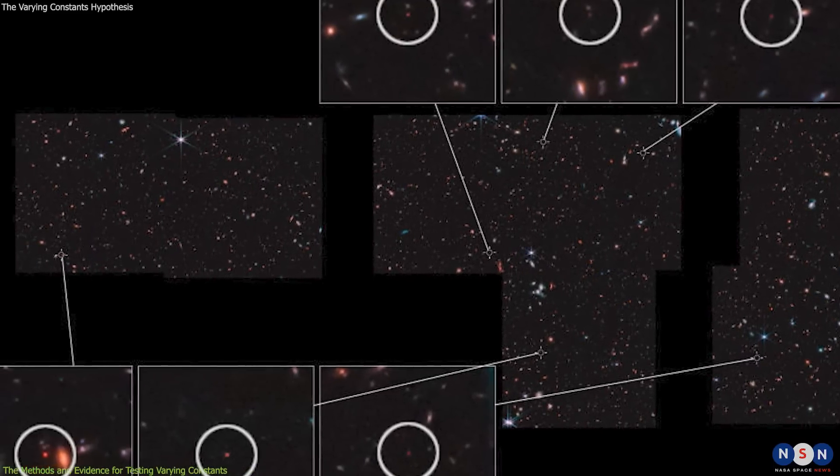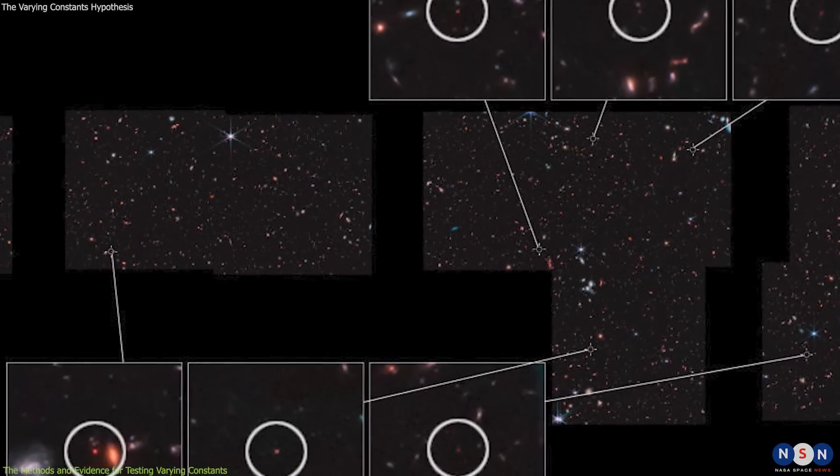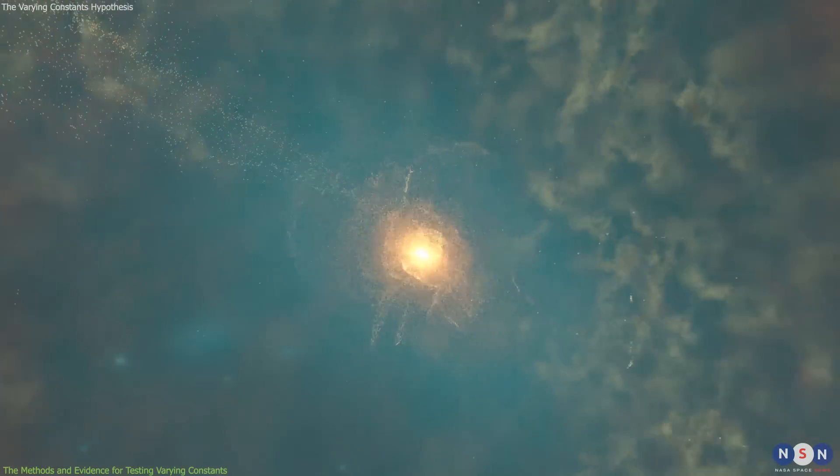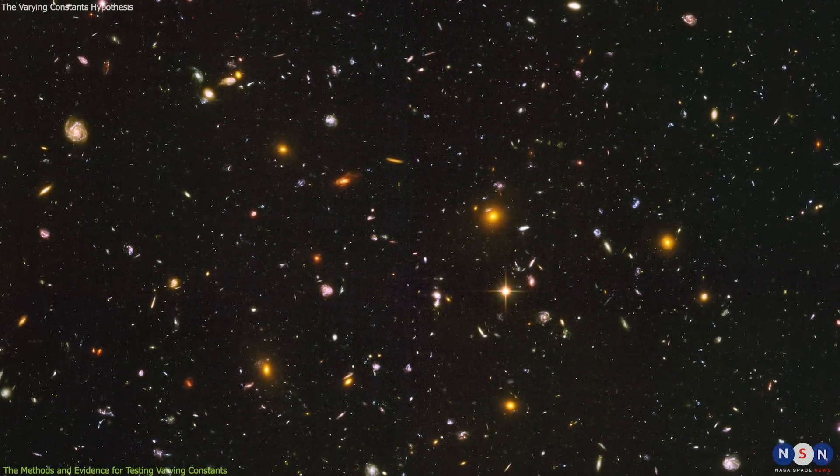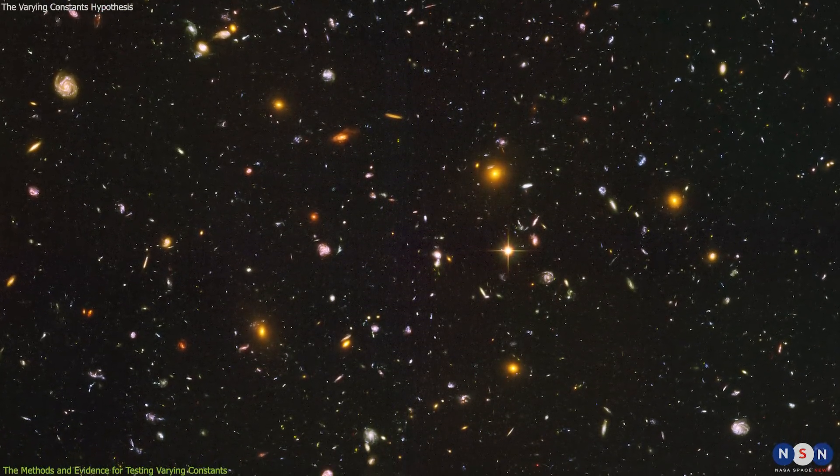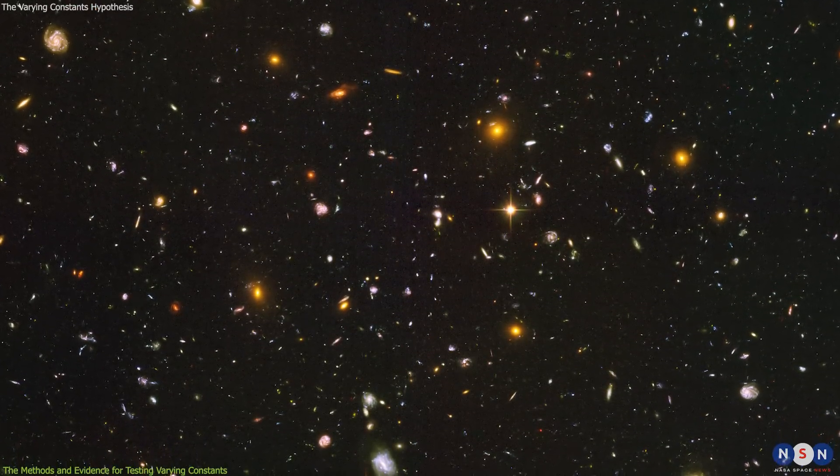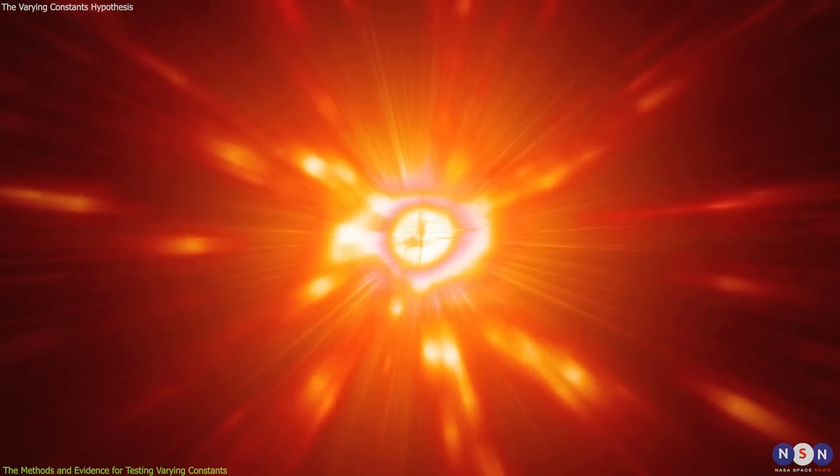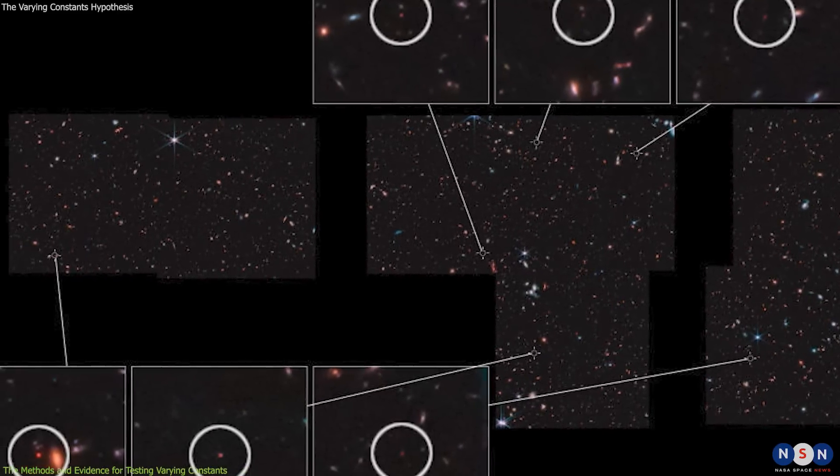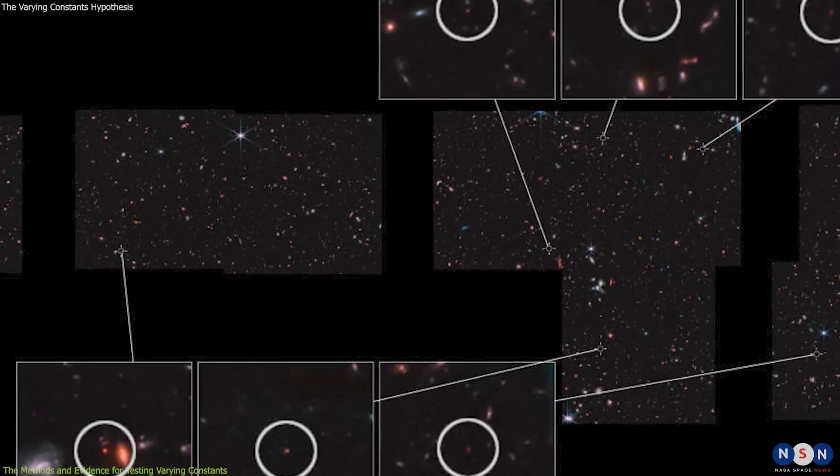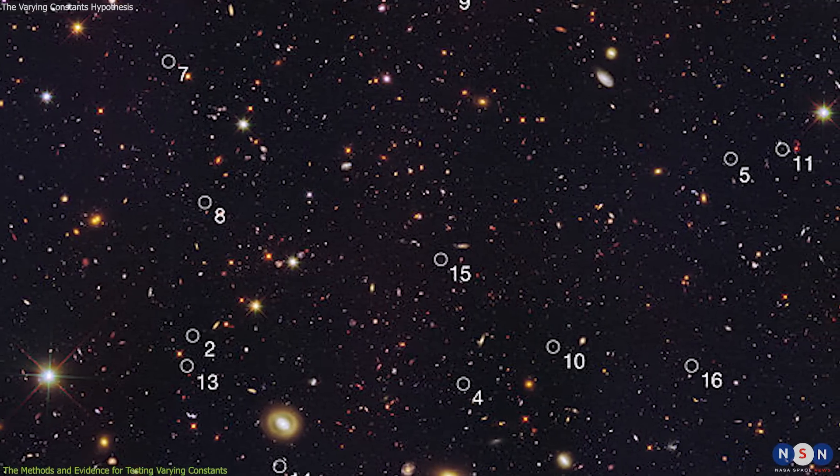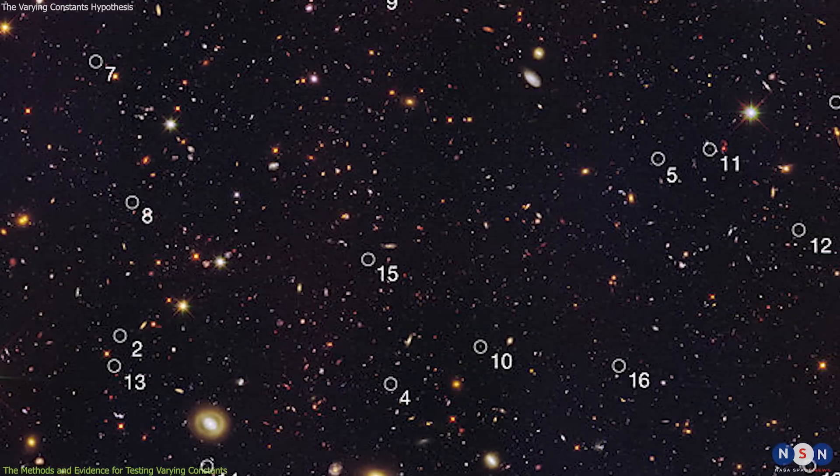Another example is the case of galaxies in the early universe that are too mature and evolved for their age. These galaxies are called Red Nuggets, and they are very compact and massive galaxies that had already formed most of their stars by the time the universe was only about 300 million years old. However, if alpha or C were lower in the past, then these galaxies could have formed later and slower than we currently think, and thus appear more evolved than they really are. These examples show that varying constants of nature could affect what we see in the past and how we interpret our observations. However, these examples are not conclusive and definitive, as they rely on assumptions and uncertainties that could be challenged or revised by other factors or explanations. Therefore, more data and analysis are needed to confirm or refute these examples, and to determine their significance and implications.